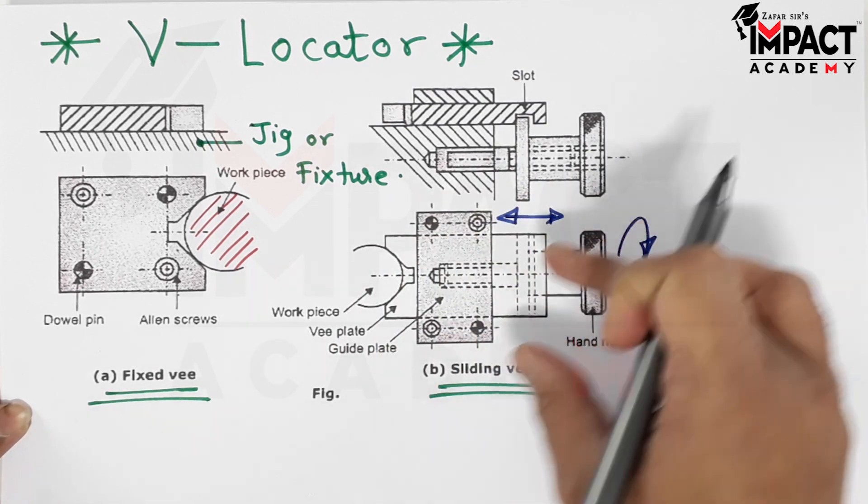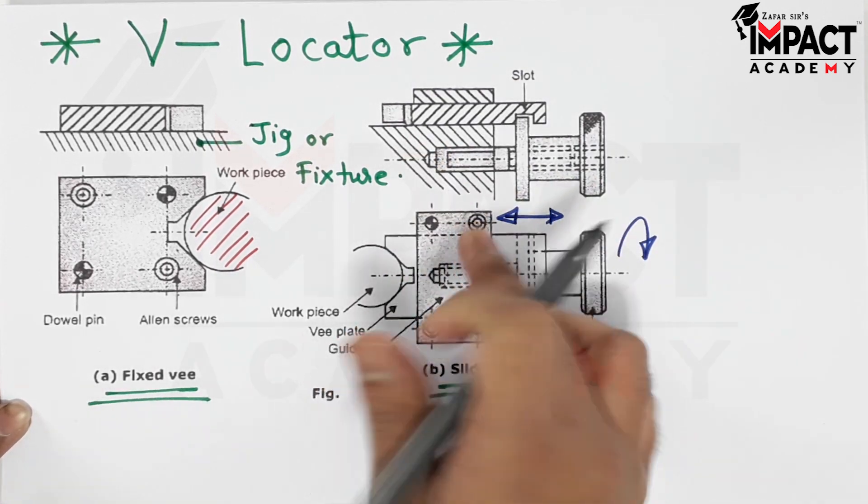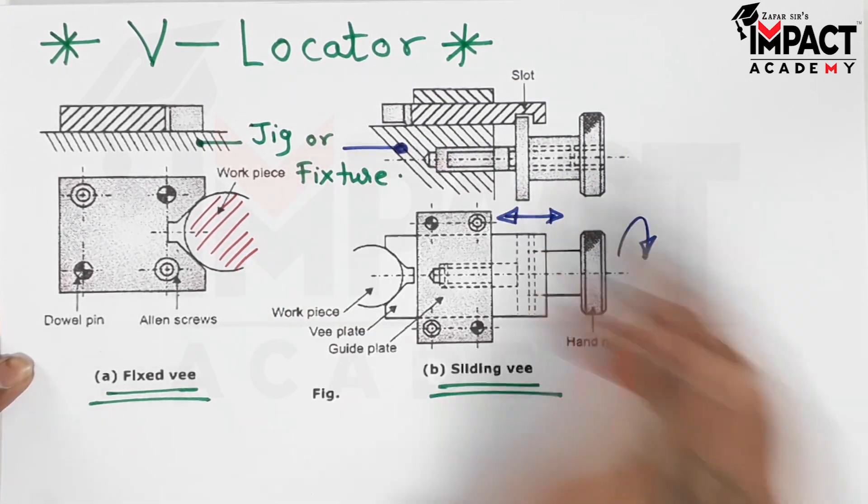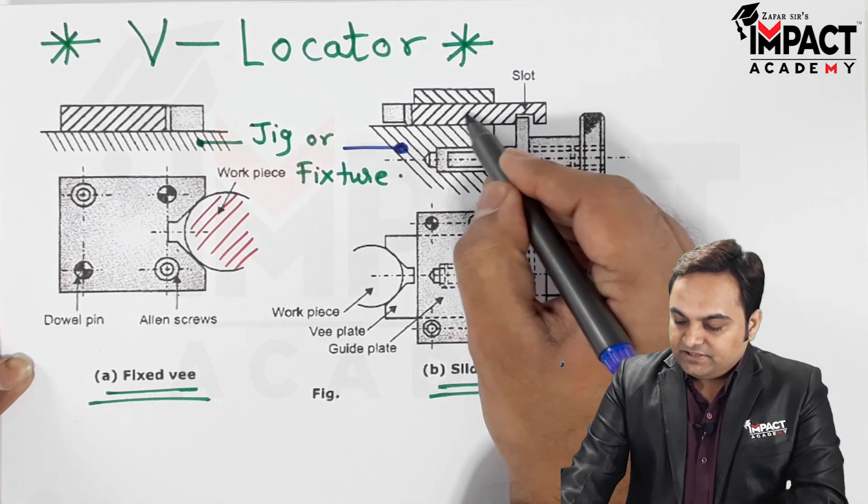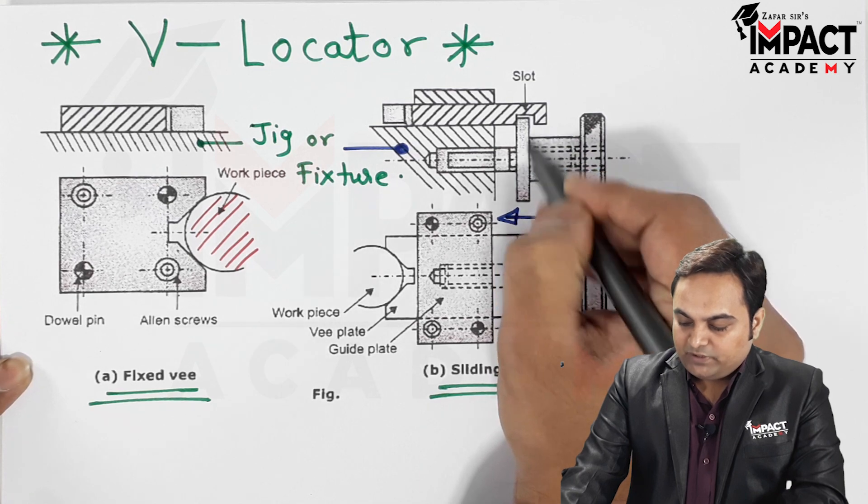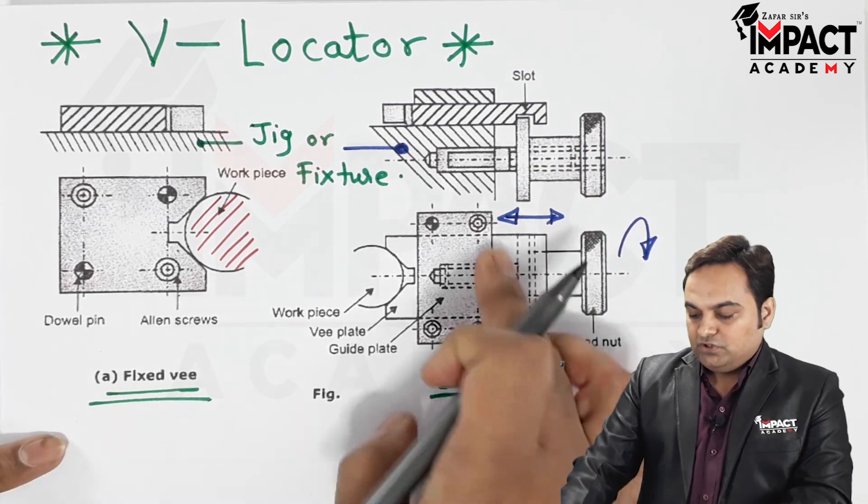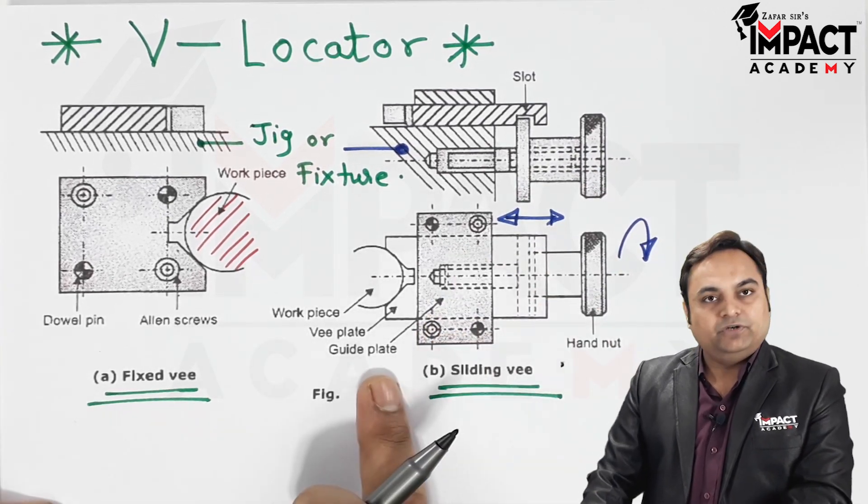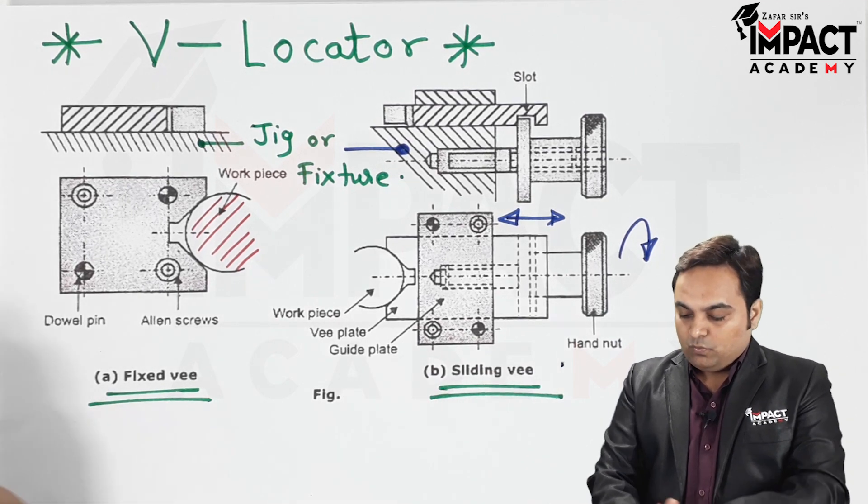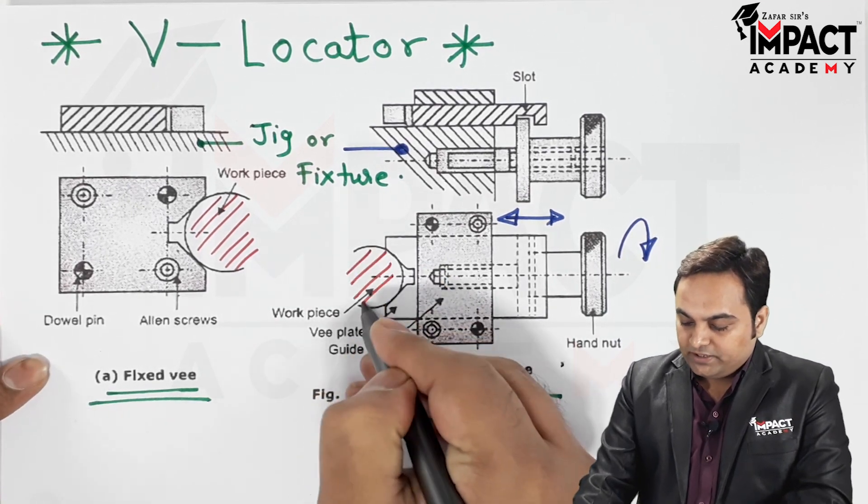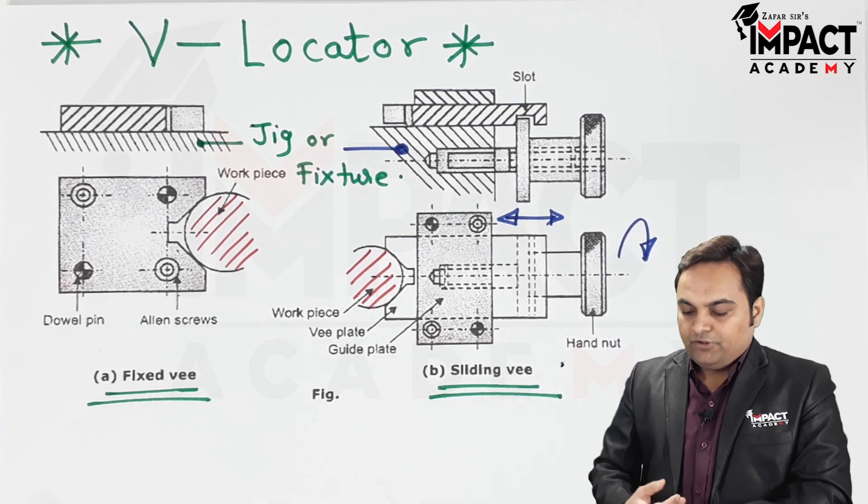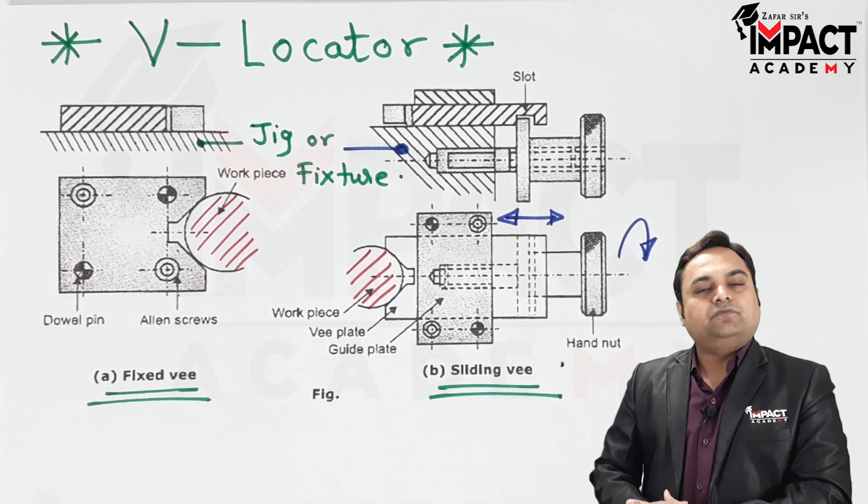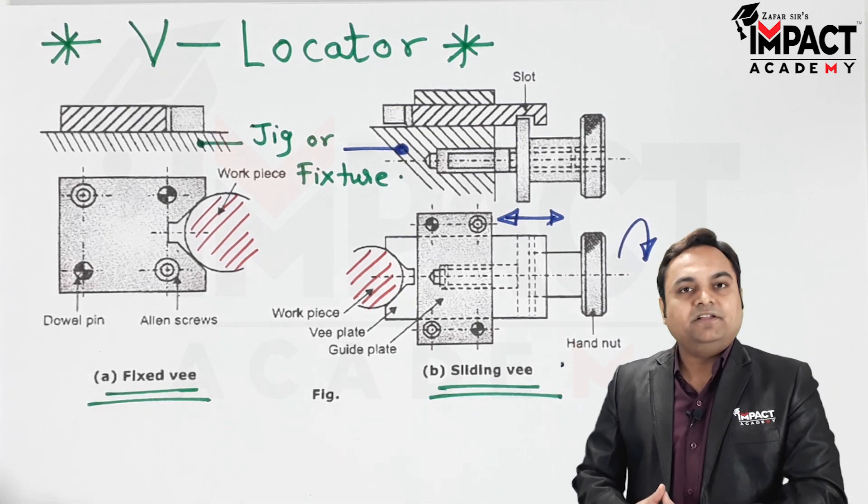It is also fixed inside the jig or fixture body which is over here. So here we have a jig or fixture body, and then there is a slot provided inside the locator which provides the locking arrangement, which locks the V-locator in the particular direction. Once the workpiece is located, we can perform any kind of operation or machining operations on that workpiece. So in short, that was a quick description regarding the V-locator.